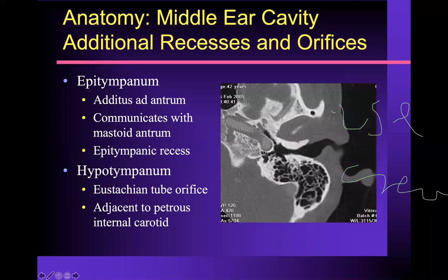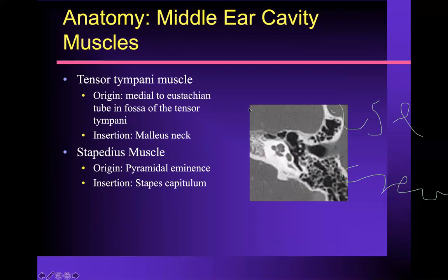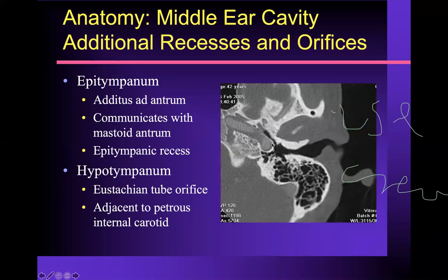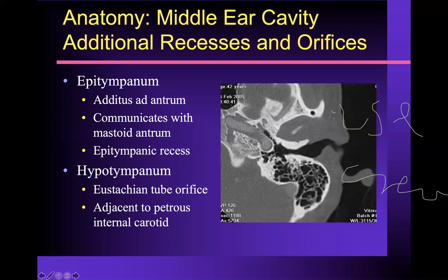Another space in the hypotympanum is the Eustachian tube, which drains the middle ear cavity and equalizes pressure. The opening for the Eustachian tube is in the anterior aspect of the hypotympanum and extends inferiorly to the nasopharynx. Notice the relationship of the Eustachian tube to the posterior genu of the petrous internal carotid artery. The carotid plate separates the Eustachian tube opening from the carotid itself. Surgery in this region can be dangerous — if you fracture the carotid plate, you could injure the petrous segment of the internal carotid artery.